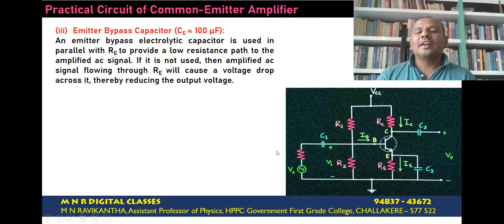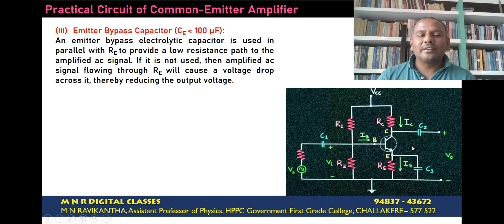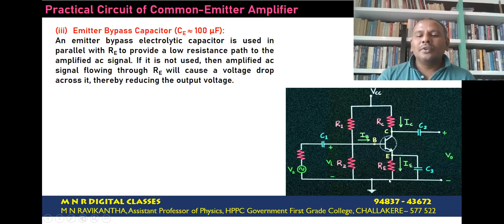The next element is the emitter bypass capacitor. This is an electrolytic capacitor having a value of around 100 microfarads. It is connected in parallel with the emitter resistance RE to provide low resistance for the output signal. If this is not used in the circuit, then the output current simply passes through the emitter resistance, which provides negative feedback and leads to a reduction in the amplification of the signal.